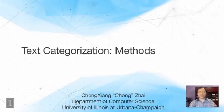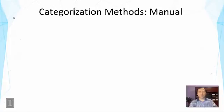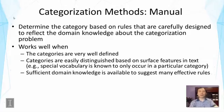This lecture is about the methods for text categorization. First, there are many methods for text categorization. In one such method, the idea is to determine the category based on some rules that we design carefully to reflect domain knowledge about the categorization problem. For example, if you want to do topic categorization for news articles, you can say: if the news article mentions words like 'game' and 'sports' three times, then we're going to say it's about sports. This allows us to deterministically decide which category a document should be put into.